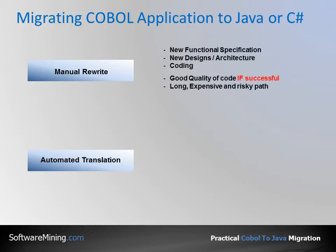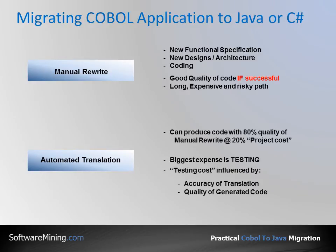Manual rewrite requires a new functional specification to be drawn up, then new design and architecture, and finally coding. It can produce good quality code if the project is successful, but like all large software projects, it can be a lengthy, expensive, and risky path. In automatic translation, we can produce code with 80% quality of the manual rewrite at 20% of the cost.